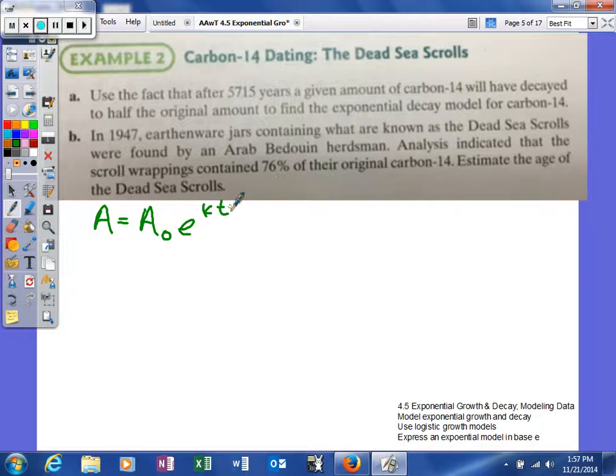Now as you can see, there are 1, 2, 3, 4 different variables. So for us to figure out one of them, we need to know three others. So we know t. We definitely know t because it tells us the number of years. So we'll say 5,715 years.